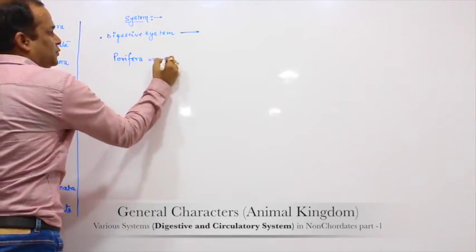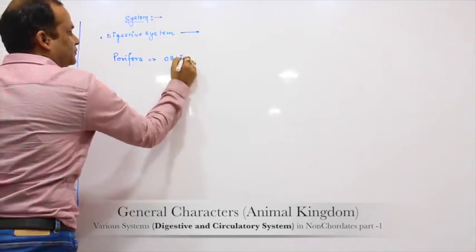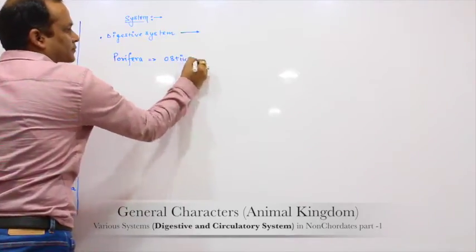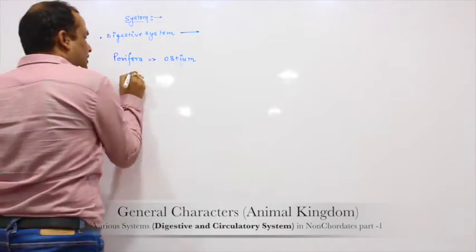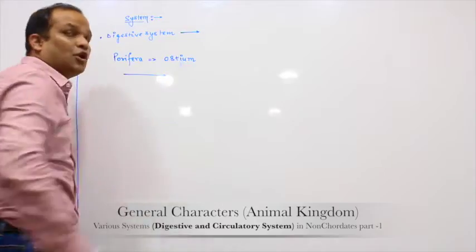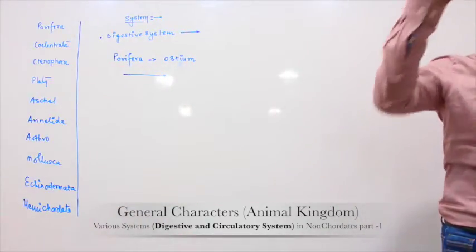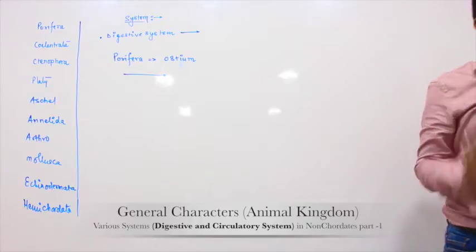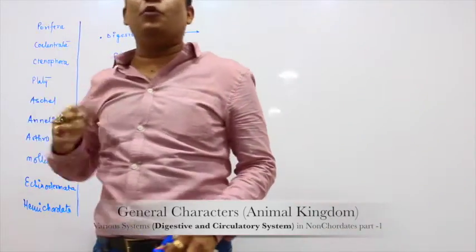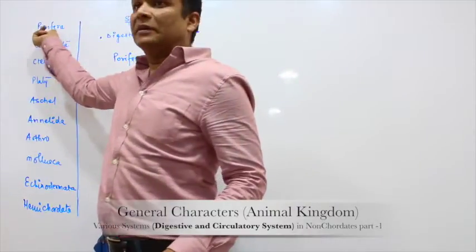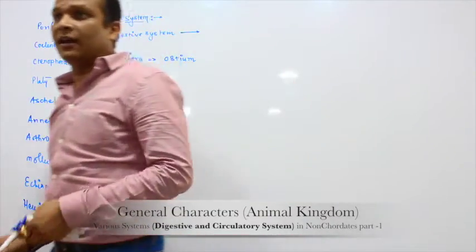Ingestion in Porifera occurs through Ostium — the pore. What is Ostium? Ostium are the pores which are present on the surface of Porifera, and therefore the verification of Porifera is known as pore-bearing organism — 'phara' means bearing, pore rakhne wala organism.